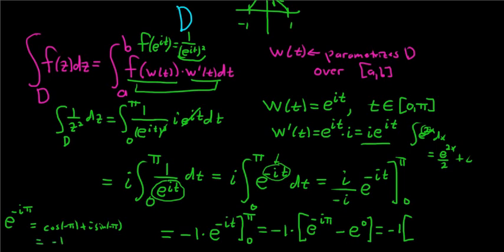Cosine of negative pi is the same as cosine of pi, it's negative 1. And then sine of negative pi is 0, so this is just negative 1. So this is negative 1. e to the 0 is 1, so negative 1.